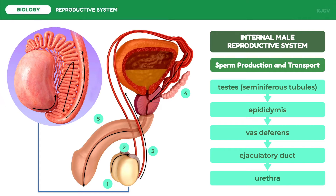If a male is considering family planning by not wanting to have any more children, a procedure called vasectomy is done. In vasectomy, the vas deferens is cut and tied, which blocks the sperm cell from coming out of the epididymis. This leads to male sterilization or permanent contraception. However, the male can still ejaculate; the sperm cells produced by the testes are simply absorbed by the body.